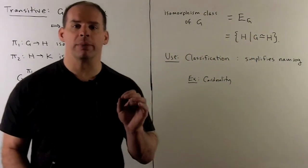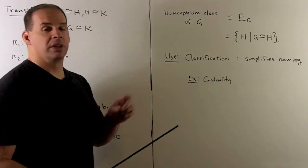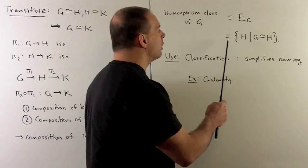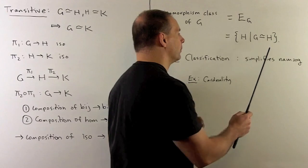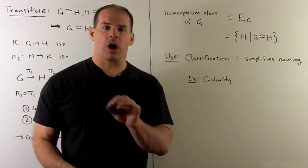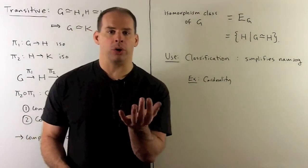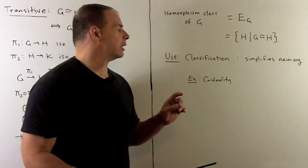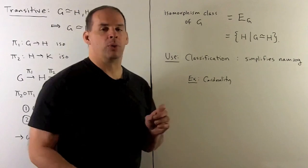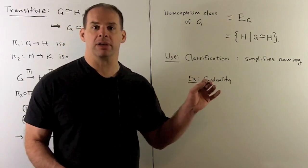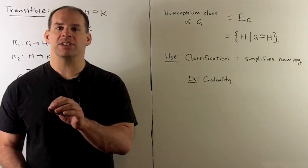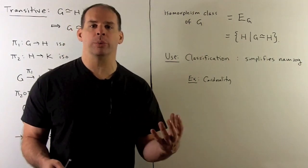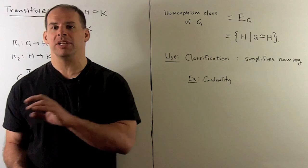Now we have an equivalence relation, so we can form equivalence classes. For a given group G, the equivalence class is the isomorphism class of G — the collection of all groups H such that H is isomorphic to G. As with cardinality, in a given class there is really only one group; there are just many ways to label the points such that multiplication is preserved. If we were looking for a classification, this handles all the double counting. For instance, Z mod 6 and the direct product Z mod 2 with Z mod 3 are in the same equivalence class, so it would be cumbersome to count them as separate cases every time.